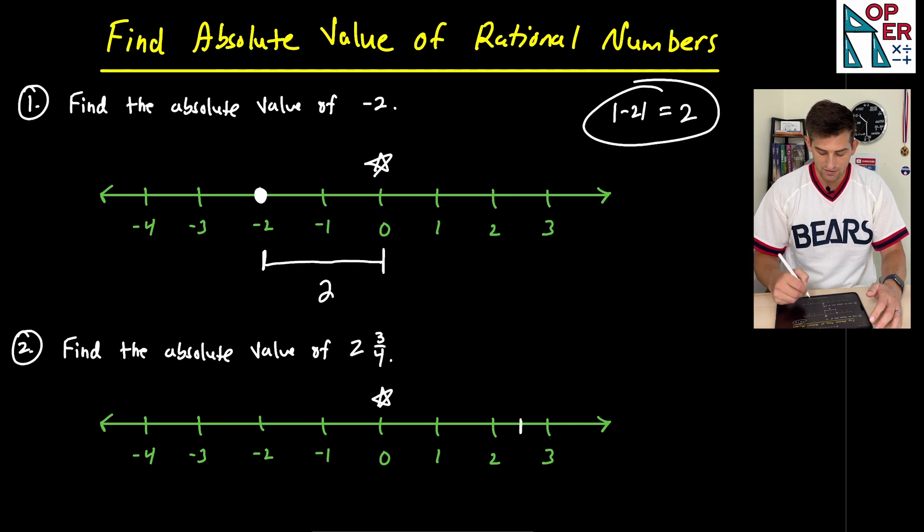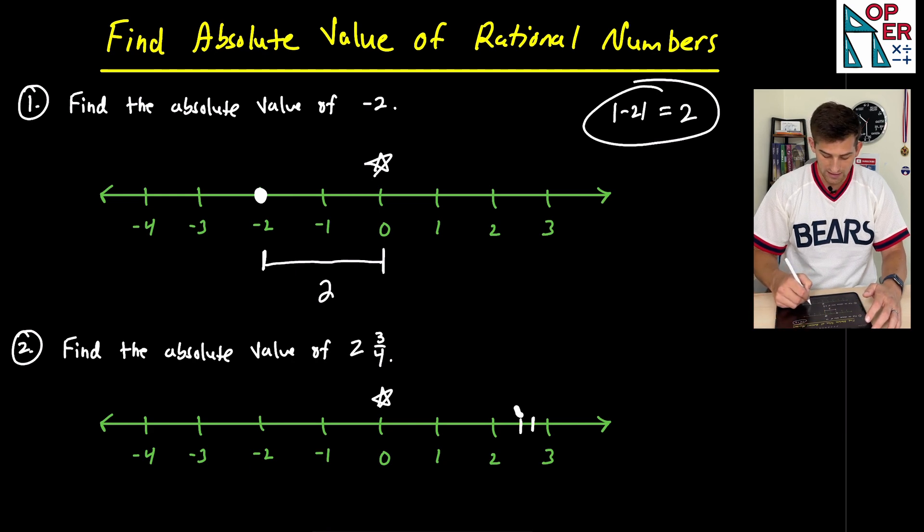This would probably be two and a half, right? So it needs to be a little bit closer to three than my half tick right there. So let's put my dot right there. And this is going to represent two and three fourths.